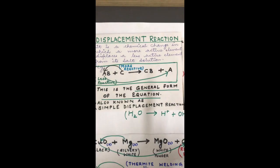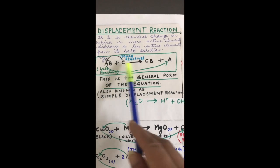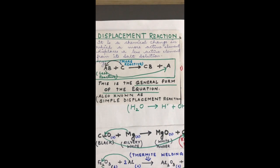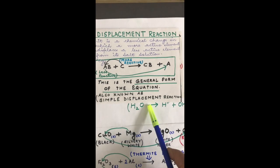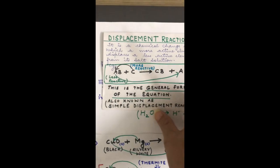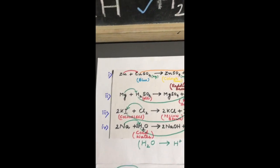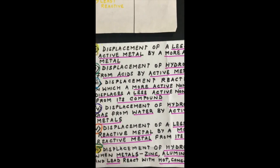C being more reactive is going to displace A, move it out, take its position, and form CB. This is what is meant by a displacement reaction, which occurs on the basis of the activity series. This general form is also known as a simple displacement reaction. Now when we study simple displacement reactions, we will also look at the different types. You can see certain sets of reactions — let us see which category they lie in.